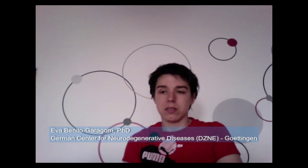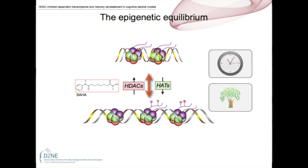What we're trying to do here is understand cognitive decline and the molecular basis of it so that we can also test out possible therapies. This is based on the notion that the genome is in fact rather plastic and that the environment can interact with it at different levels, such as DNA methylation or protein modifications including histone acetylation. Histone acetylation in particular is known to cause certain conformational states that are more or less amenable to transcription, and this balance between acetylated and non-acetylated chromatin is controlled by a set of enzymes called the histone acetyltransferases and the histone deacetylases.